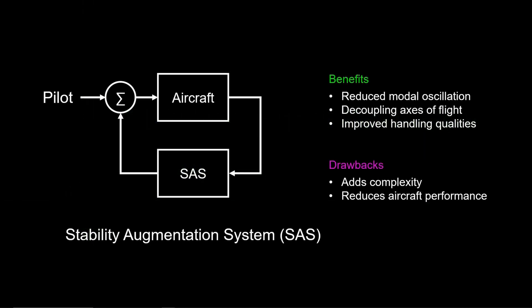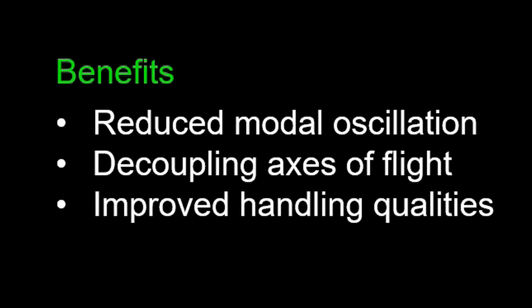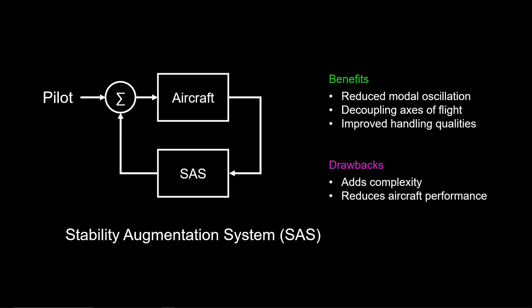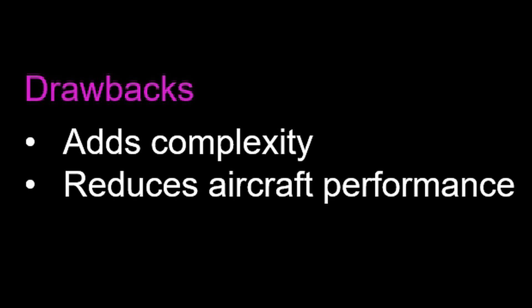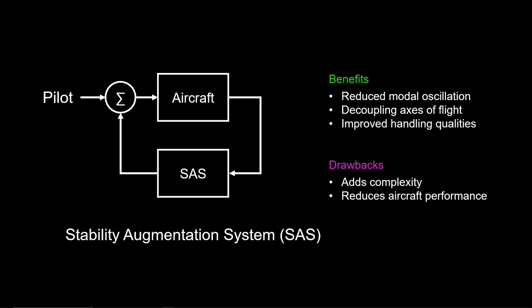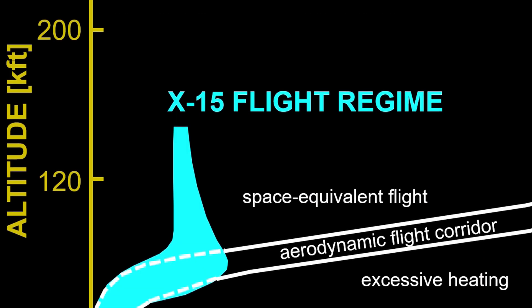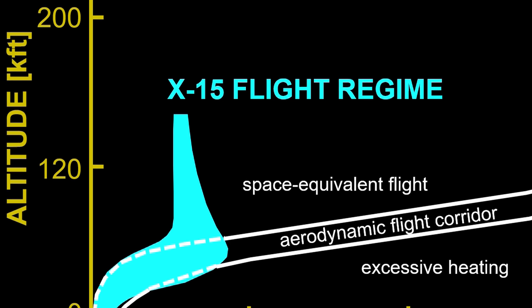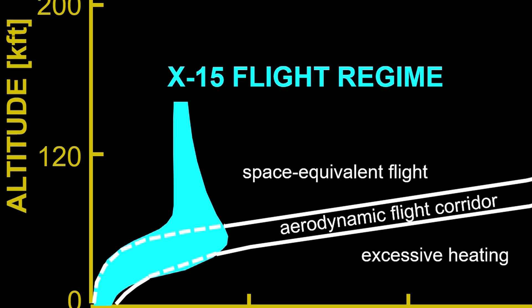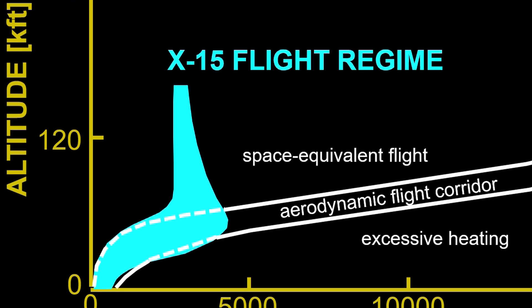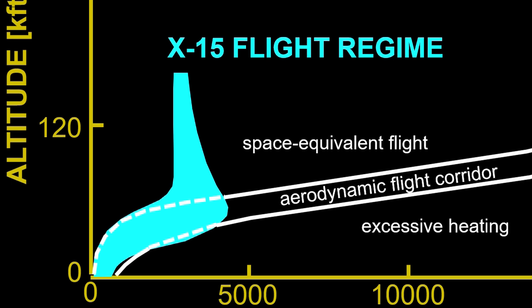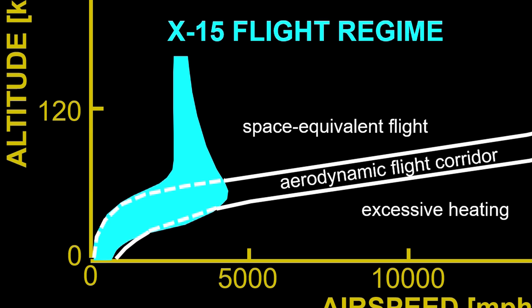The stability augmentation system, or SAS, is a feedback control system that improves handling qualities of an aircraft. This occurs through artificial damping of angular rates, increasing stability. Additionally, directional coupling through a control input can be decoupled with appropriate interconnect channels. On the downside, the SAS adds complexity and reduces turn rate. Nevertheless, the SAS meets a crucial need for the X-15 because as the X-15 operates over a wide range of flight conditions, its modal and therefore handling qualities can change, and sometimes rapidly.